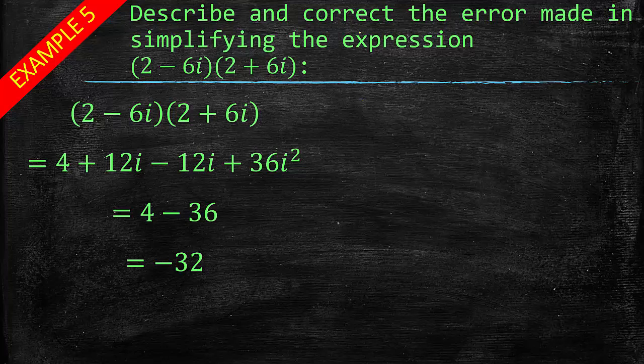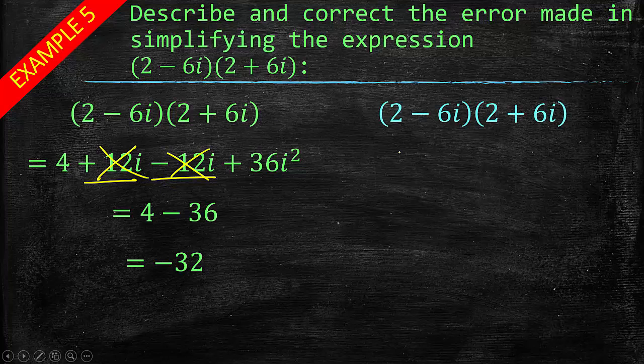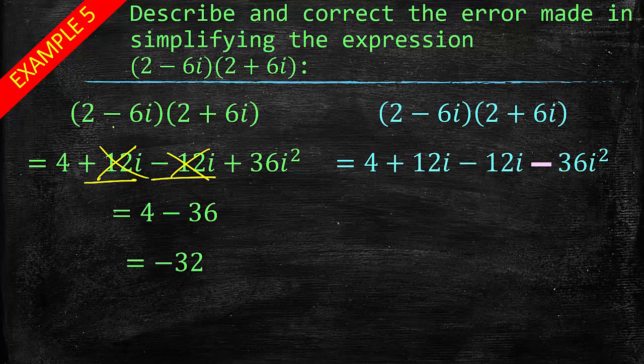Last example. Describe and correct the error made in simplifying the expression (2 minus 6i)(2 plus 6i). So again, we use FOIL. Or you remember your rules about multiplying by things that are exactly the same except for their middle operation. So if you do, you're going to remember that this is going to cancel out, the 12i and the negative 12i. Gone. Bye-bye. Here's the thing. When we do this, negative 6i times positive 6i is negative 36i squared. They did a positive.